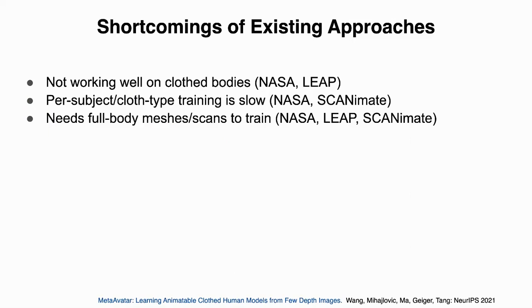Still, with this exciting advancement, there are shortcomings of each existing approach. NASA and LIP were designed for minimally clothed bodies and do not work well on clothed bodies. Although ScanAnimate works on clothed bodies, it requires full body scans to train, and it trains per-subject cloth-type model from scratch, which takes a lot of time for each subject and cloth type.